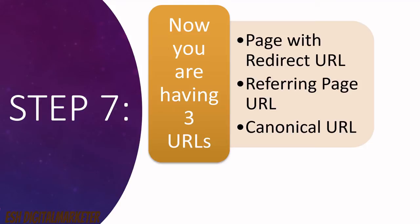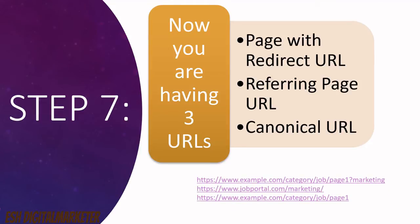Now you have reached the analyzing part. You are working with three URLs: the page with redirect URL, the referring page URL, and the canonical URL. For example, the page with redirect URL having an issue might be a category page with a query string, the referring page URL is from an external domain like a job portal, and the canonical URL is set separately. If you are not getting any traffic from this URL and you have zero backlinks for this page, there is no point in redirecting this URL.